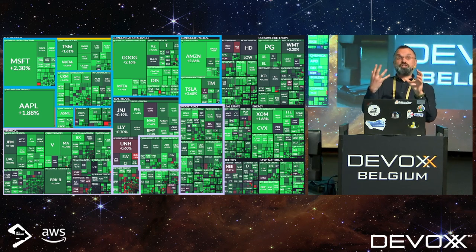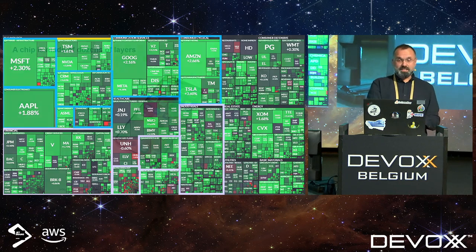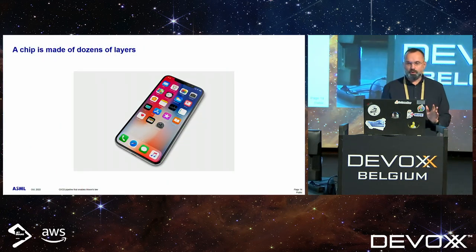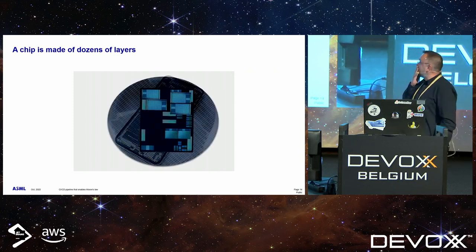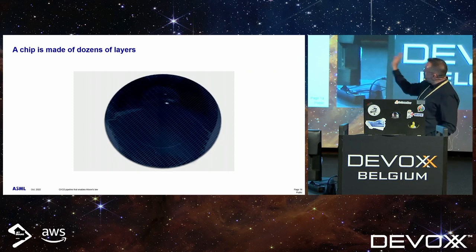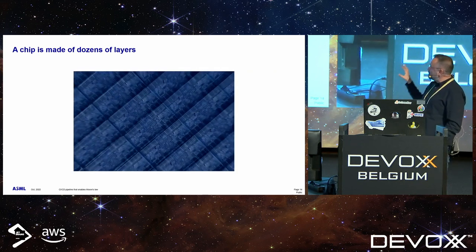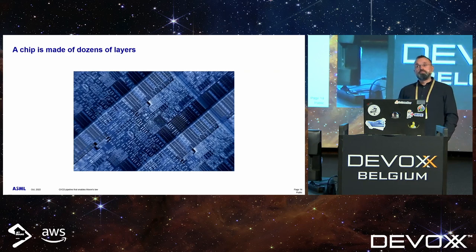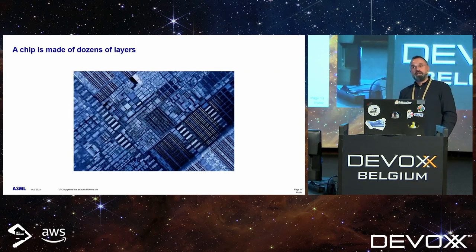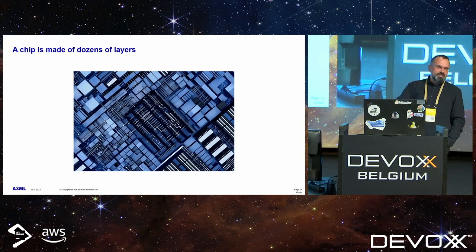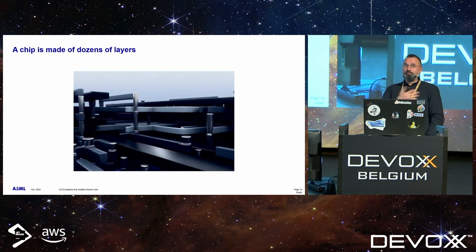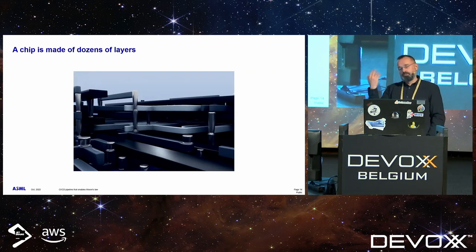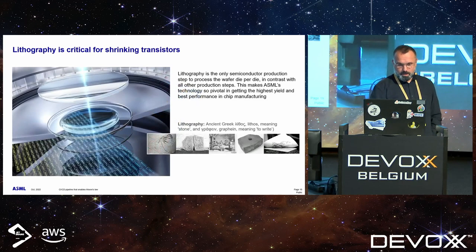Let me show you how a chip looks from inside — I have a nice animation I borrowed from a colleague. So check it out. This is a chip. It's actually on a wafer; on a wafer you create a bunch of them. When you zoom in, there are multiple layers. I'll touch a little bit on how layers are made just to give you an introduction, because ASML machines are very cool — there are a bunch of robots inside.